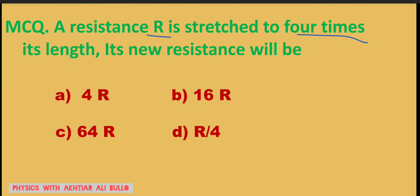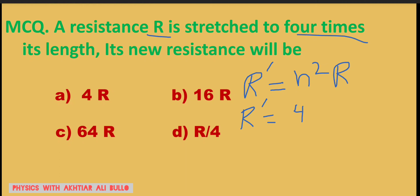To calculate resistance in this condition, we will use the formula R' = N² × R. As the resistance R is stretched to four times its length, the value of N is 4. So R' will be equal to the square of N, that is 4² × R, and the square of 4 is 16, so R' = 16R.